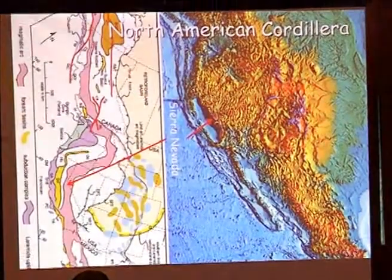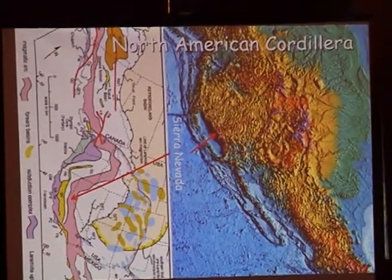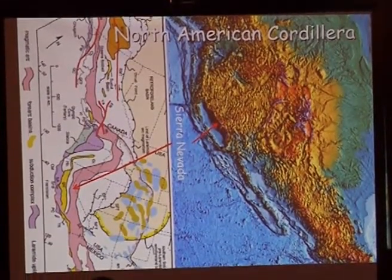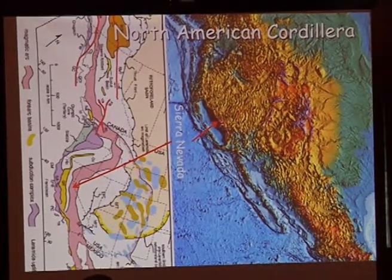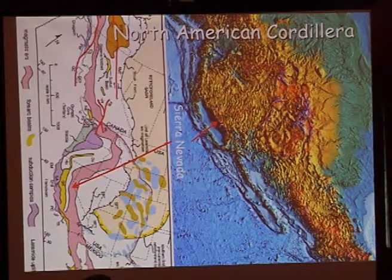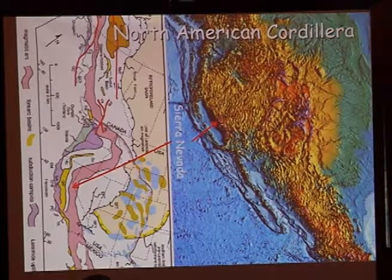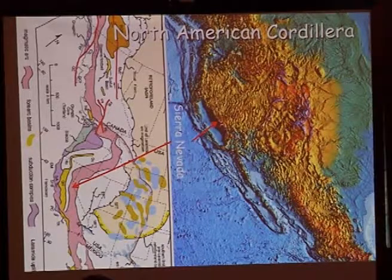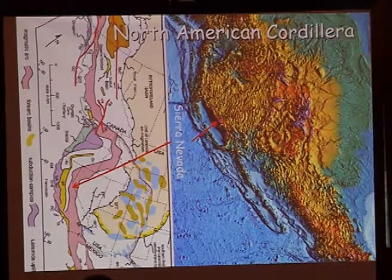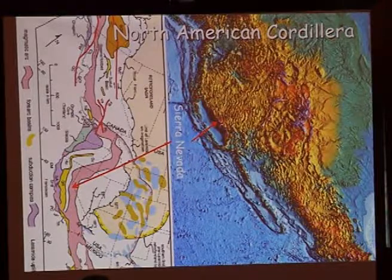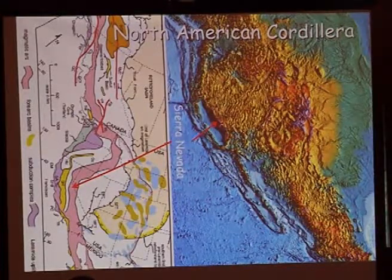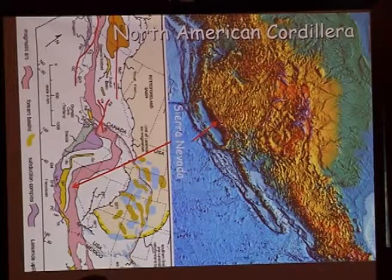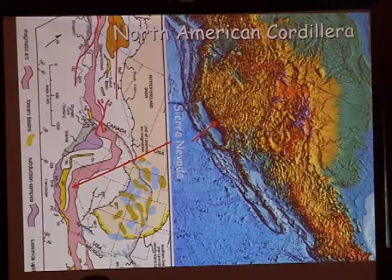Let's look at some examples using these techniques, starting in the North American Cordillera. We think from geologic, tectonic, and geophysical studies that the North American Cordillera 50 million years ago might have looked very much like the Andean Cordillera of today. Those of us who work in the Andes often use that as motivation — the Andes are what the Western U.S. looked like, and so we can go study the present-day Andes to understand what the past looked like.